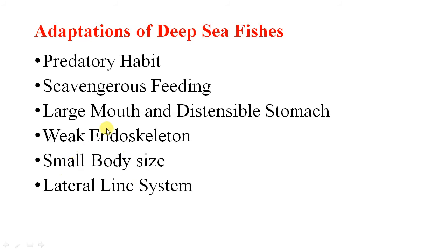Another adaptation is the weak endoskeleton. In deep sea animals, the endoskeleton is fragile, weak, light, and flexible. This is due to an uncalcified or weakly calcified skeletal system, caused by the low temperature prevailing in the deep sea. An example is the Chimera, which you might have heard of as the king of herrings.